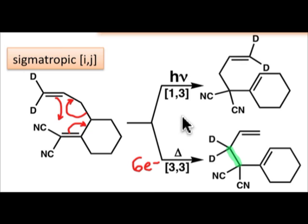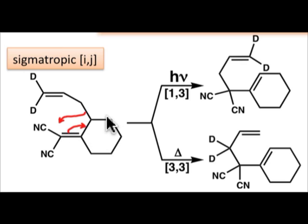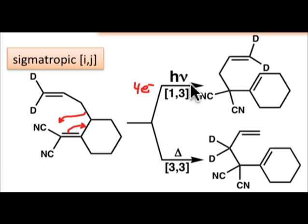Under photochemical conditions, a different product is formed — the result of a 1,3-sigmatropic rearrangement rather than a 3,3-sigmatropic rearrangement. Curved arrow convention describes the electron flow: starting with the sigma bond that breaks, it adds into the pi bond and the pi bond moves over. There are only two curved arrows, meaning four electrons are involved in this photochemical 1,3-sigmatropic rearrangement. Because this is a photochemical process, the frontier orbitals involved would be a HOMO to HOMO* type interaction, with the key orbitals being a sigma orbital and a pi orbital.